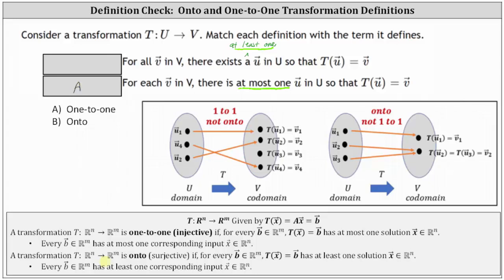A transformation T from ℝⁿ to ℝᵐ is onto, or surjective, if for every vector b in ℝᵐ, T of vector x equals vector b has at least one solution, vector x in ℝⁿ. The original wording was 'there exists a vector u,' but it's a little more clear to say 'at least one vector u.' This first definition is the definition of an onto transformation, which is (b).